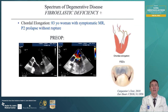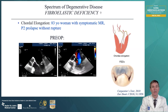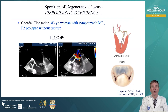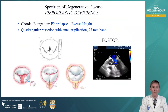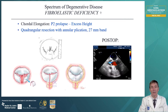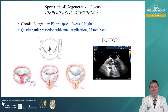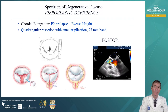Here's cordal elongation in an 83-year-old woman with symptomatic mitral regurgitation. This is P2 prolapse but this time without rupture — the cord was stretched but there was excessive leaflet tissue as in FED+. So what we need to do in this case is decrease the excessive height of the posterior scallop. Here we did a quadrangular resection with annular plication, downsizing that posterior annulus. P1 and P3 were normal height so we could do a reconstruction with an annular plication and have no regurgitation.